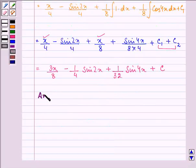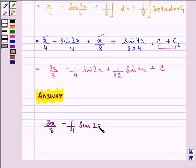So the final answer is 3x by 8 minus 1 by 4 sin 2x plus 1 by 32 sin 4x plus c. This completes the session. Hope you understood it well and enjoyed it too. Bye-bye.